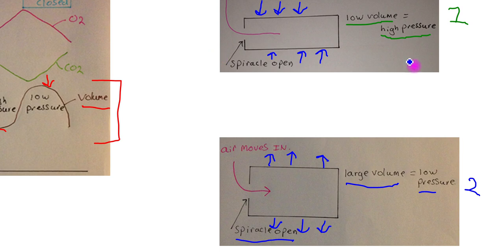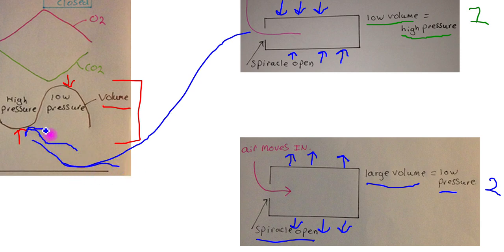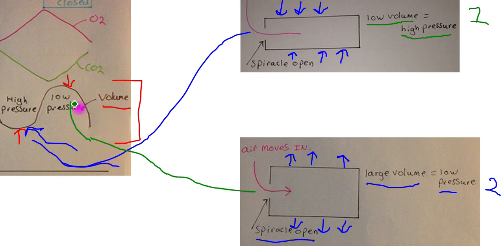How do these two diagrams relate to the graph? Diagram number one, with low volume, relates to the part of the graph where you have low volume and high pressure. The other diagram relates to the part of the graph where you have high volume and low pressure. Hopefully that helps clarify the ventilation movements, and the volume and pressure changes within the tracheal system.